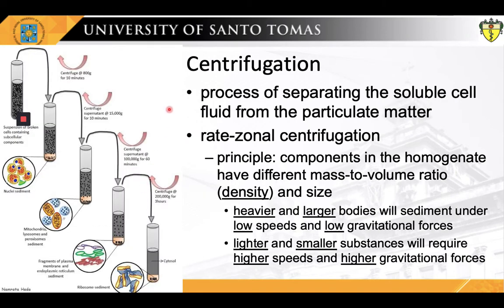The third and last phase is centrifugation. This is the process of separation of the soluble cell fluid from the particulate matter, as well as the further fractionation of the latter in the homogenate. The different components are separated according to differences in their properties like mass and size. This phase is usually based on the principle of rate zonal centrifugation, which states that components in the homogenate have different mass-to-volume ratios and sizes.